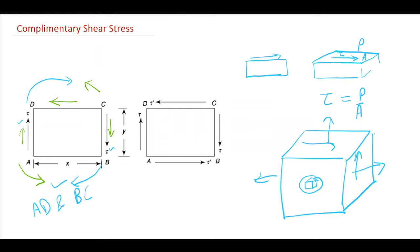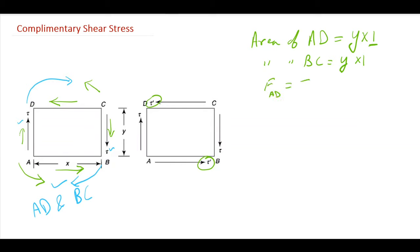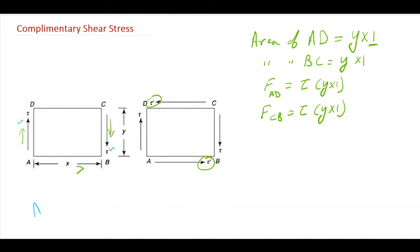To maintain equilibrium, there must be forces giving a couple in the opposite direction. Let's assume the area of face AD is y times 1, where thickness is 1 unit. Similarly, the area of face BC is y times 1. So the force on AD is tau times y times 1, and the force on face CB is also tau times y times 1.